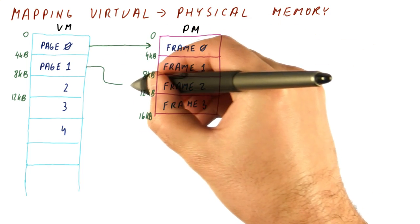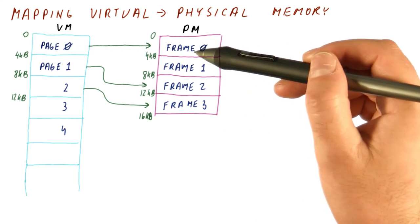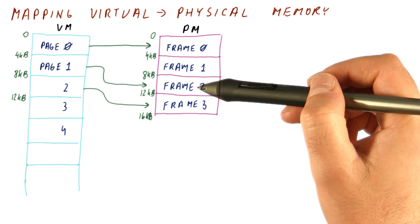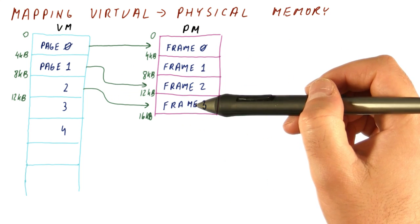We can do something like this, for example. So page zero, for example, the operating system decides to put it in frame zero. Page one can be in frame two. Page two can be in frame three.